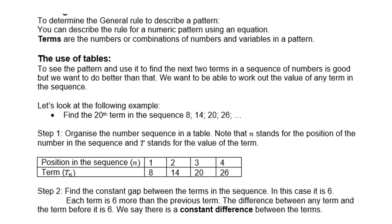To determine the general rule to describe a pattern, you can describe the rule for a numeric pattern using an equation. Terms are the numbers or combinations of numbers and variables in a pattern. Let's first see how we can use a table to do this. We want to be able to work out the value of any term in the sequence. Let's look at the following example.